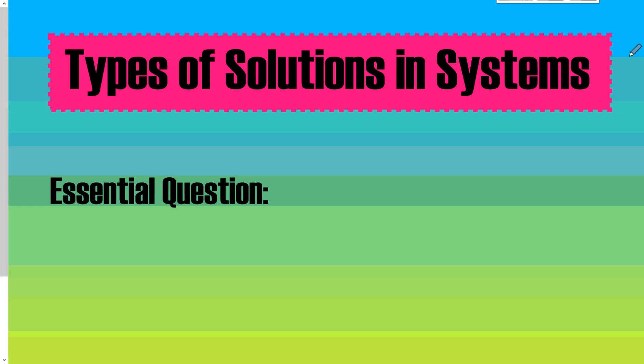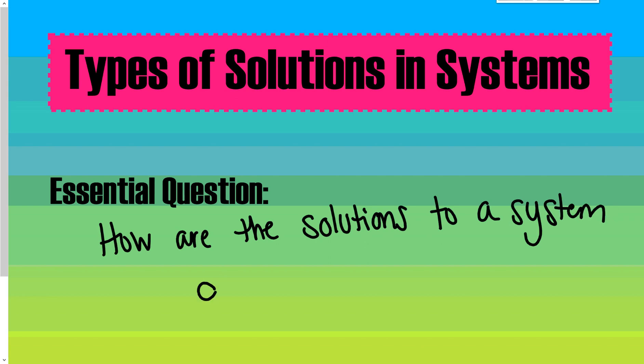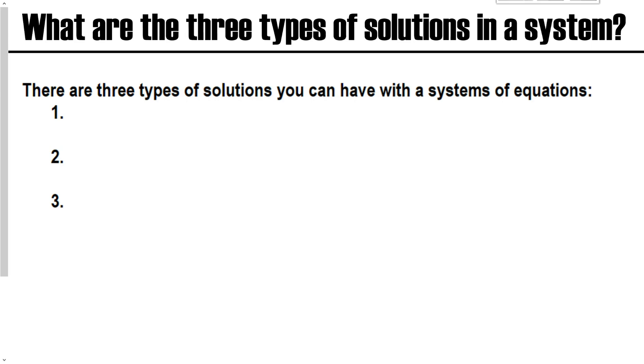Okay, in this video, we're going to look at the different types of solutions that systems can have and their characteristics. How are these solutions to a system different from each other? We're going to look at their characteristics, both visually and in equations. First, let's go over what the types are.